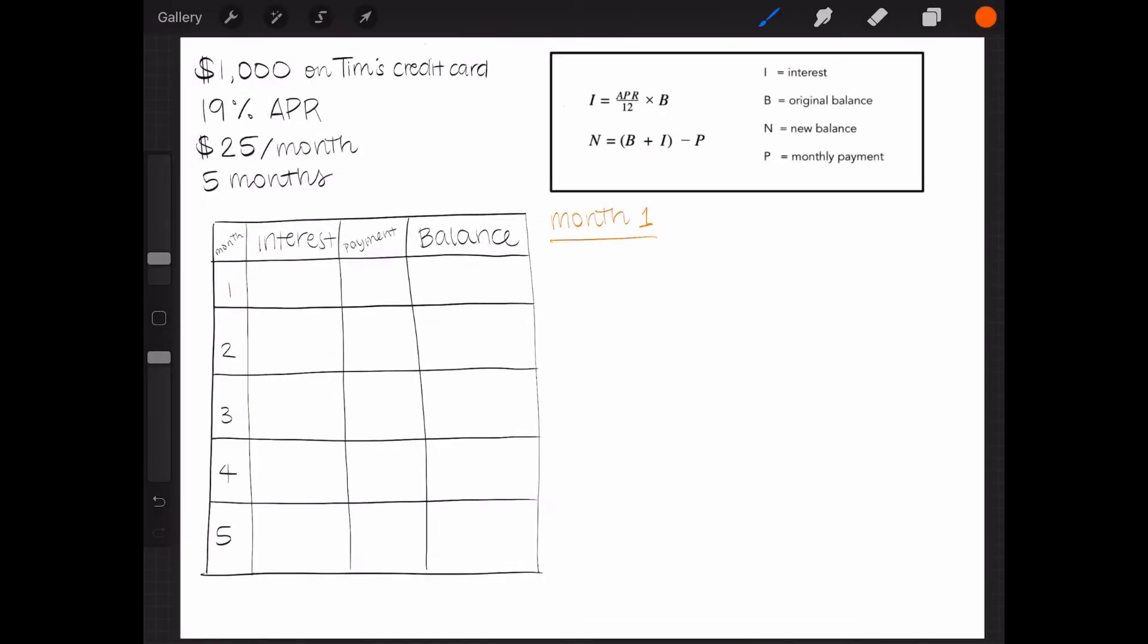To calculate interest for the first month, I'll need the first formula. 19% APR is the annual rate, so I need to divide by 12 to get the monthly rate. 19% as a decimal is 0.19, then divided by 12 equals 0.0158.